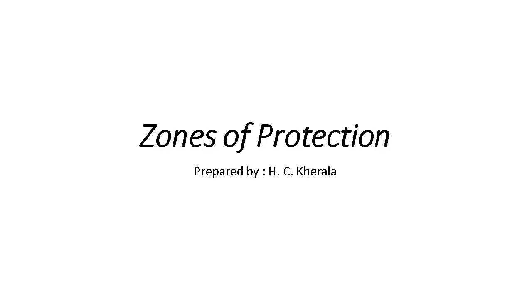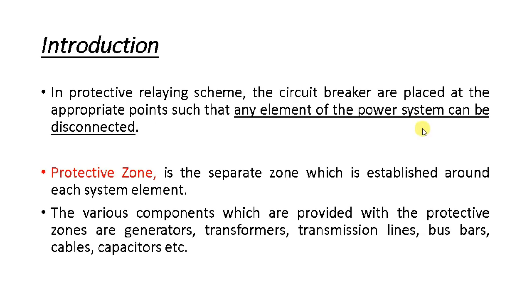Welcome again to Essential Electrical. Last time we discussed the need of protection relaying. In this lecture we are going to discuss the different zones of protection, and also the primary and backup protection. In the last lecture we discussed the effective protection scheme and how we implement it — the causes and effects of faults in a power system and how we can minimize them with the help of a relaying scheme.